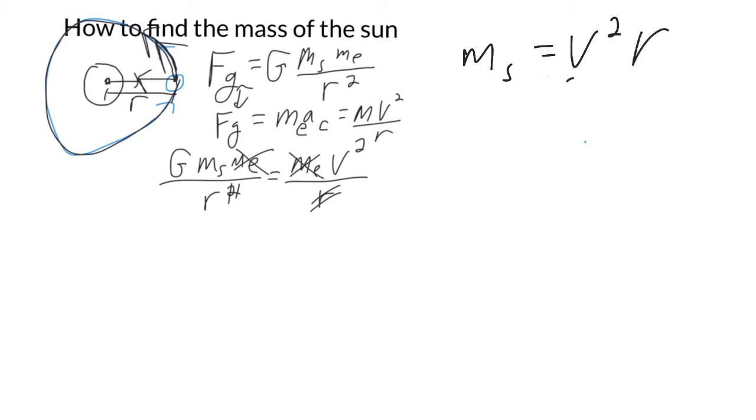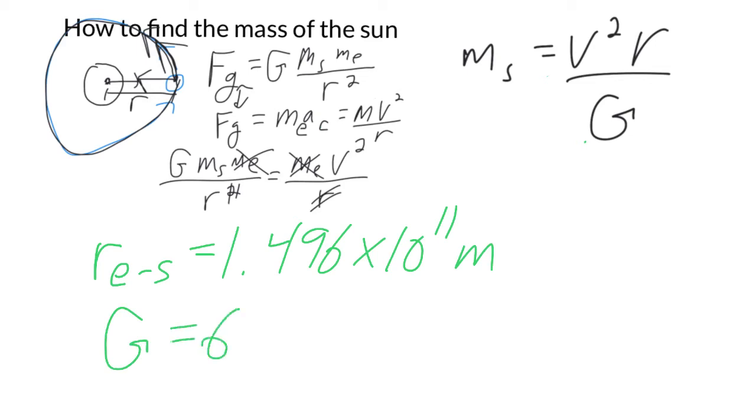Let's define some of our variables here. R is the distance between the Earth and the Sun, and you can just look this number up. The number is 1.496 times 10 to the 11th meters. And then big G, that's just a constant, so that's 6.67 times 10 to the negative 11.